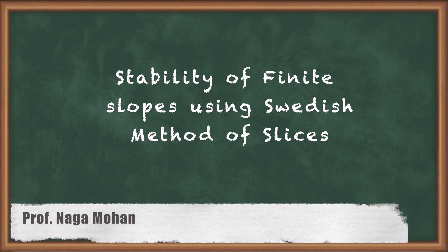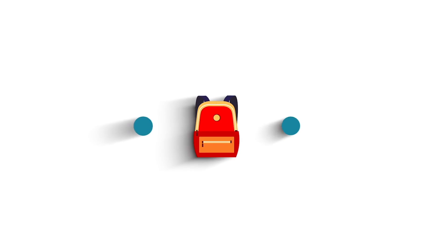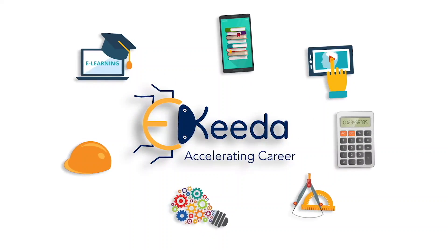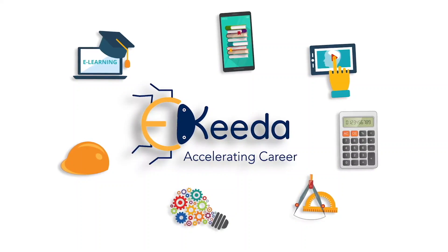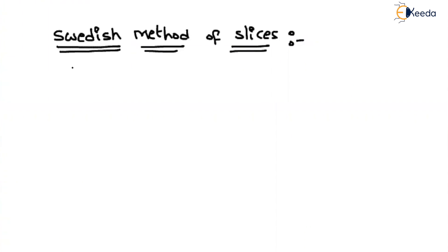Hello friends. In the present video, let us study about the Swedish method of slices. In the previous video, we studied the analysis of finite slopes for a purely cohesive soil. The Swedish method of slices is applicable for C-phi soils. Even if it is a purely cohesive soil, we can simplify the final equation in terms of the purely cohesive soil.